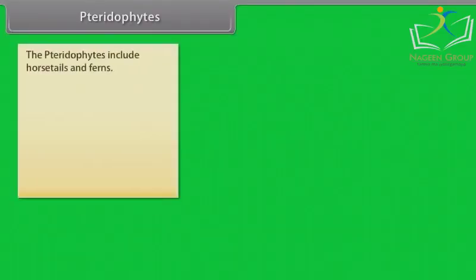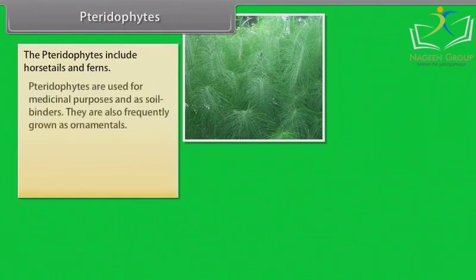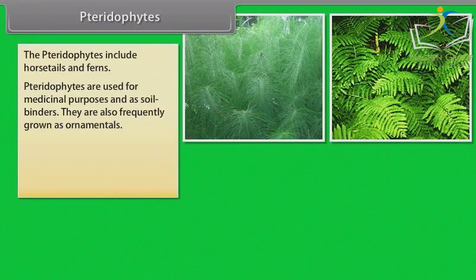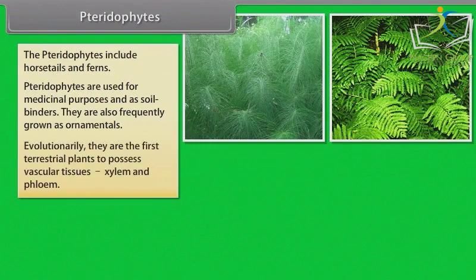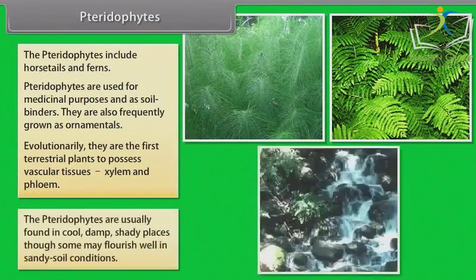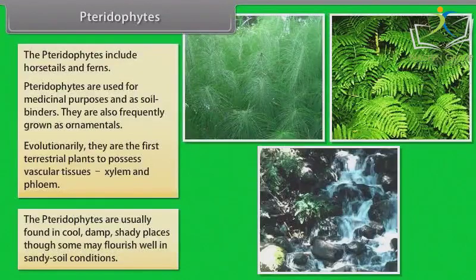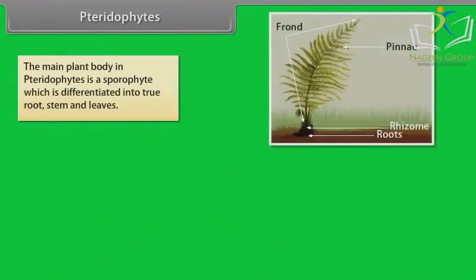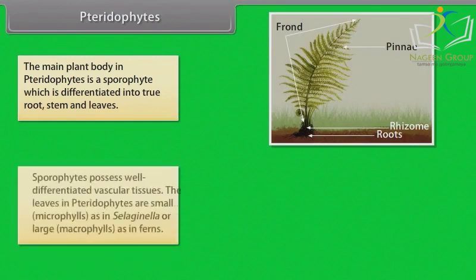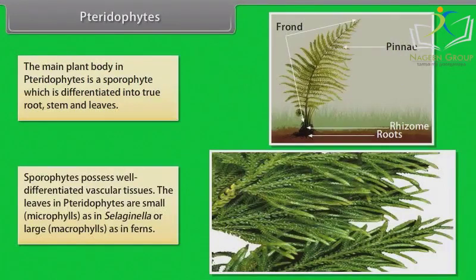The pteridophytes include horsetails and ferns. Pteridophytes are used for medicinal purposes and as soil binders, and are also frequently grown as ornamentals. Evolutionarily, they are the first terrestrial plants to possess vascular tissues — xylem and phloem. Pteridophytes are usually found in cool, damp, shady places, though some may flourish well in sandy soil conditions. The main plant body in pteridophytes is a sporophyte, which is differentiated into true root, stem, and leaves, with well-differentiated vascular tissues. Leaves may be small microphylls as in Selaginella, or large macrophylls as in ferns.